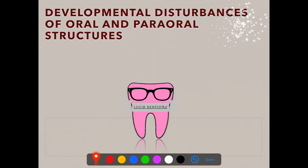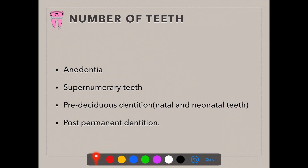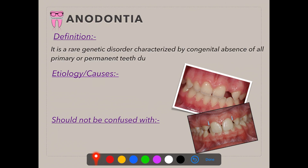Now coming to the next developmental disturbances affecting the number of teeth. Under this category we will study anodontia, supernumerary teeth, pre-deciduous dentition (natal and neonatal teeth), and post-permanent dentition. Anodontia — 'an' means absence and 'doncia' means teeth — means absent teeth. Anodontia is a rare genetic disorder characterized by congenital absence of all primary or permanent teeth due to true failure of odontogenesis.